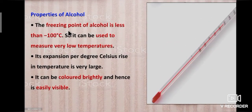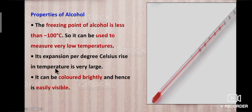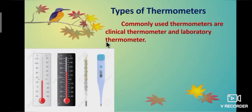Now the properties of alcohol. The freezing point of alcohol is less than minus 100°C, so it can be used to measure very low temperatures. Its expansion per degree Celsius rise in temperature is very large. Alcohol can be colored brightly and hence is easily visible.